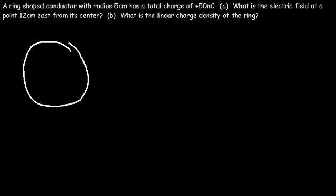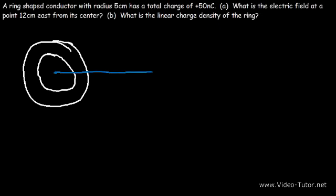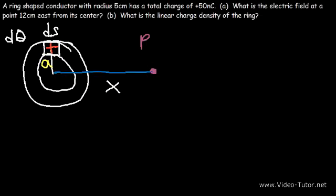Let's begin by drawing a circle and turning it into a ring. Here is the center of the ring, and 12 centimeters east we have our point of interest, point P. The distance between the center and point P we'll call X, and the radius of the ring we'll call A. Now let's take a segment of this ring which we'll call dS — that segment carries a positive charge, and we'll call the charge of that segment dq.